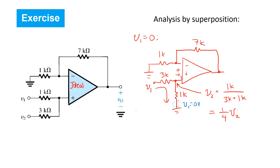From there, we have a straightforward non-inverting configuration. We know that the output voltage equals 1 plus R2 over R1 times the voltage at the positive input terminal. In this case R2 is 7K and R1 is 1K, giving a gain of 8 for the non-inverting configuration. That gain is multiplied by the voltage at the positive input terminal, which is a quarter of V2. So simplifying, we get 8 times a quarter, or a gain of 2 with respect to V2.